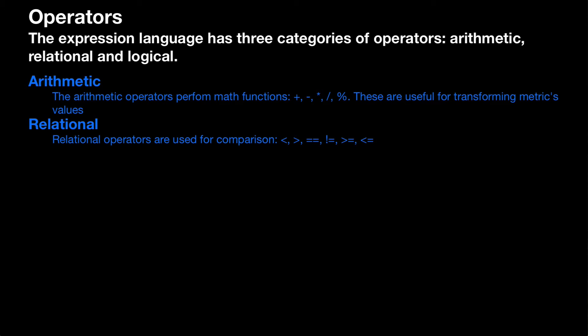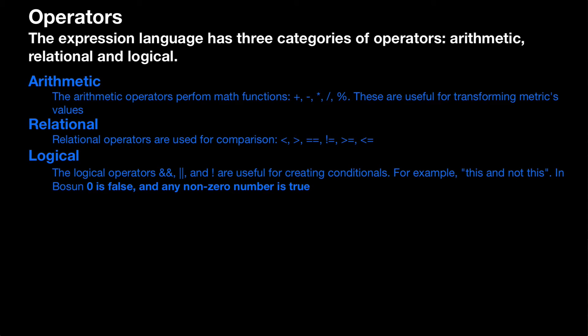There are also relational operators, and they're used for comparison — includes things like less than, greater than, and equals to. Finally, there are logical operators: and, or, and not, which are useful for creating conditionals. For example, you might want to say this and not this.